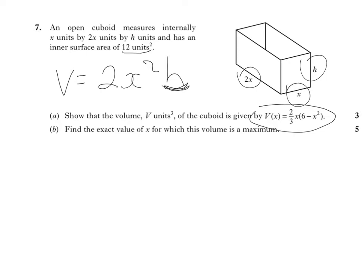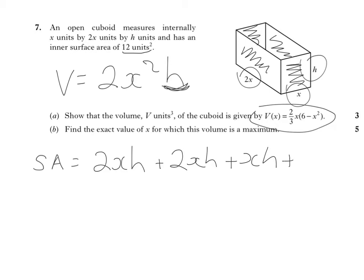That's where we use the given equation. The given equation is that the inner surface area of the cuboid is 12 square units. Now what I can do is come up with an equation for the inner surface area. So if I think about this surface here, I can see that that has got an area of 2xh. Now this side here is identical in area, so that's also got an area of 2xh. That's going to be xh, and the back will be xh again. And then if I think about the base, the bottom of the thing, well that's 2x by x, so that's 2x². And that is all equal to 12.